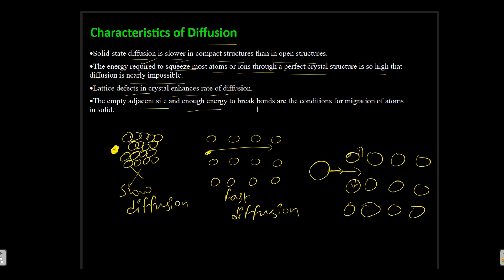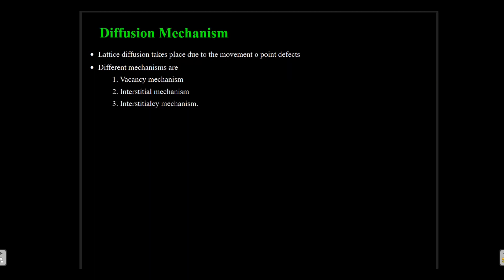There are different mechanisms for diffusion of atoms in a crystal. Lattice diffusion takes place due to the movement of point defects. There are three mechanisms: vacancy mechanism, interstitial mechanism, and interstitial C-mechanism. We will understand them one by one.